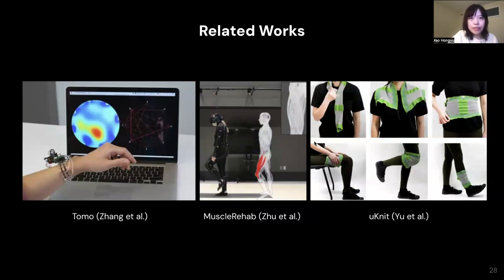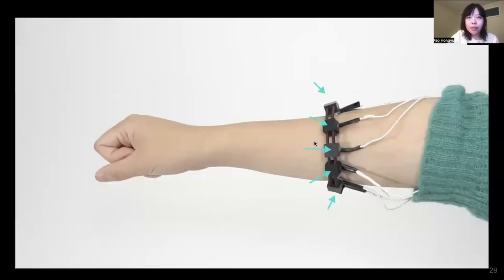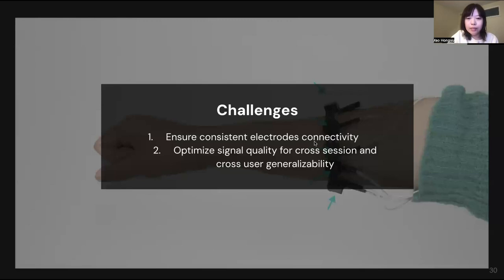Previous researchers have demonstrated EIT's capability in hand gesture classification, rehabilitation, and body pose detection. However, achieving hand pose tracking will require higher quality EIT signals and thus poses two challenges for us. EIT is very sensitive to skin condition and electrode contact. How can we ensure consistent electrical connectivity? Moreover, human body has variations in body composition and skin type. How could we ensure that EIT's signal quality could be good enough for cross-session and cross-user generalizability?